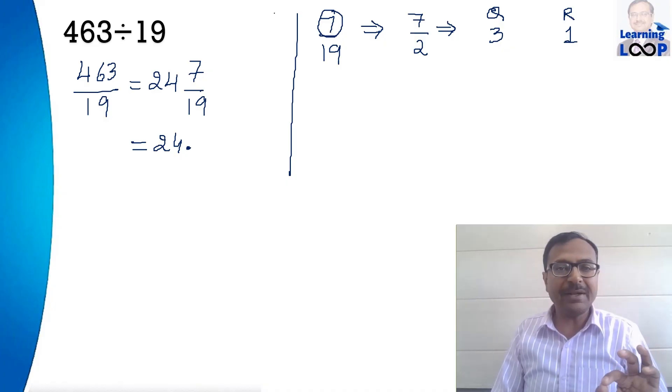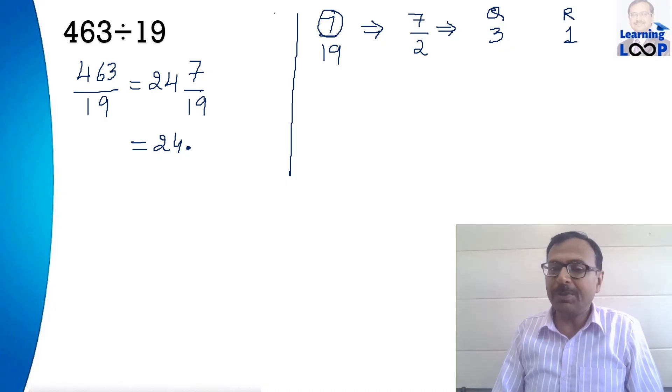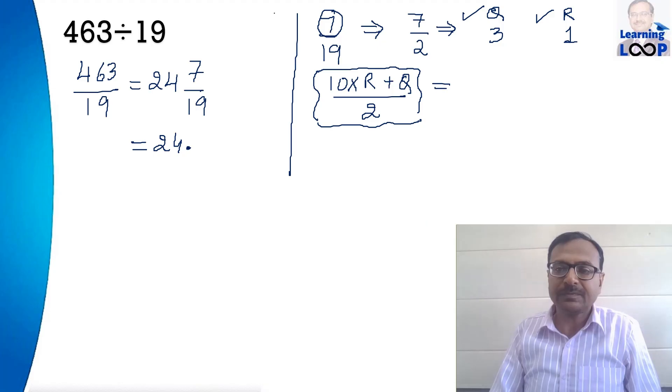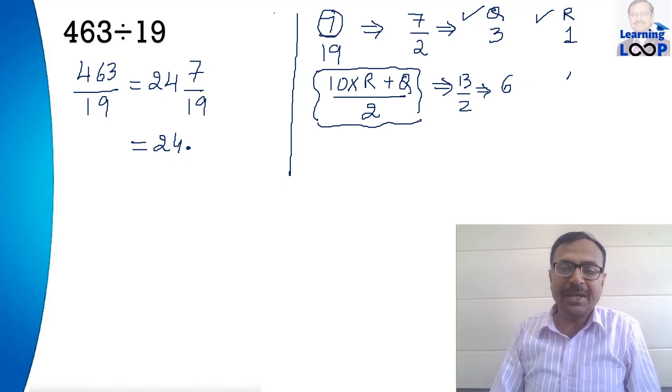Now remember these quotients which you are getting they will get you the decimal part of your answer. So you got 3 and a 1 and now you have to use a simple formula which is 10 times remainder plus quotient upon 2. Now this is the short trick which you can use for the next step. So if you put quotient as 3 and remainder as 1 you will get this as 13 by 2 and 13 by 2 if you divide 13 by 2 the quotient will be 6 and the remainder will be 1.